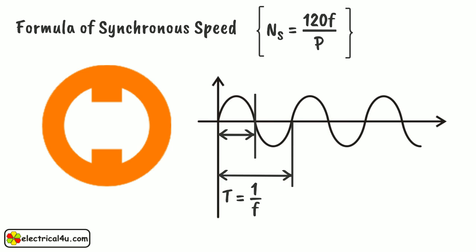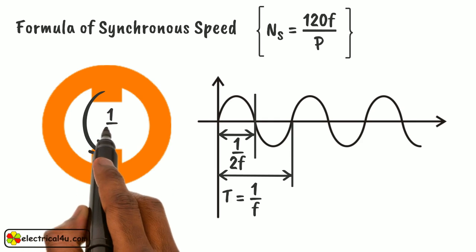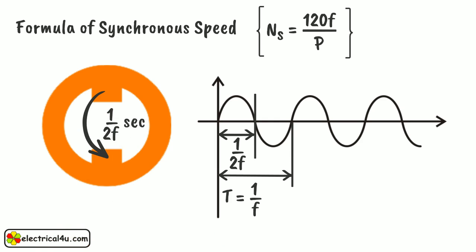Then half the period is T by 2 equals 1 by 2f. Therefore, we can say the polarity of any pole of the magnet alters in every 1 by 2f second. As the poles of the magnet are physically 180 degrees apart from each other, the polarities of magnetic field rotate 180 degrees in 1 by 2f second.